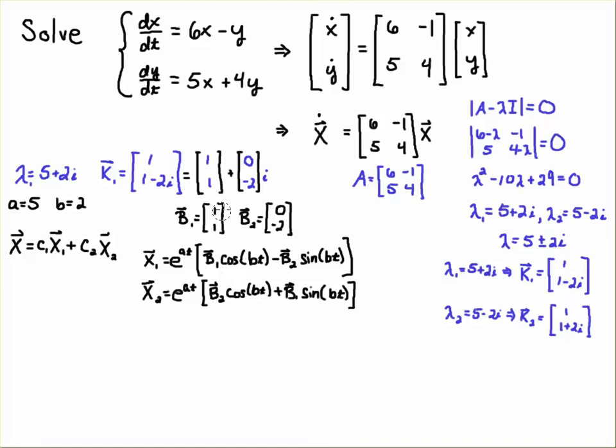[1, 1] and [0, -2]. And the first guy, x1, will look like this: e to the at, then you'll have b1 cosine bt where the little b is the imaginary part of the eigenvalue.